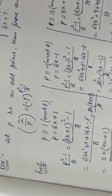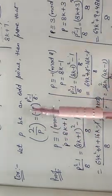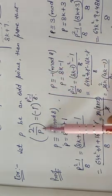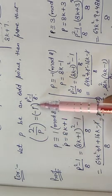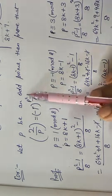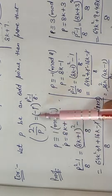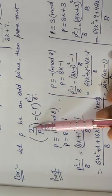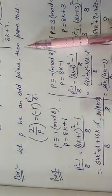In all four cases, the values are equal. Hence, (2/p) = (-1)^((p²-1)/8) for any odd prime p. So if we want to check whether 2 is a quadratic residue or non-residue modulo any odd prime p, we just calculate the value of (-1)^((p²-1)/8). If the exponent (p²-1)/8 is even, then 2 is a quadratic residue modulo p; if it is odd, then (-1)^((p²-1)/8) = -1, meaning 2 is a quadratic non-residue modulo p. This is all about today's lecture. Thank you very much.